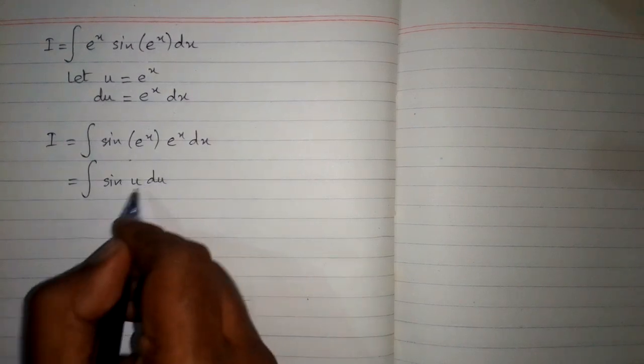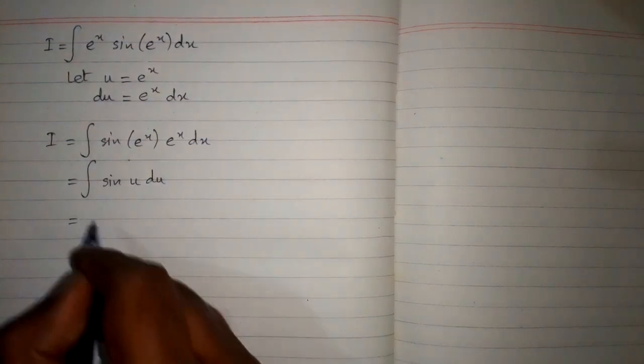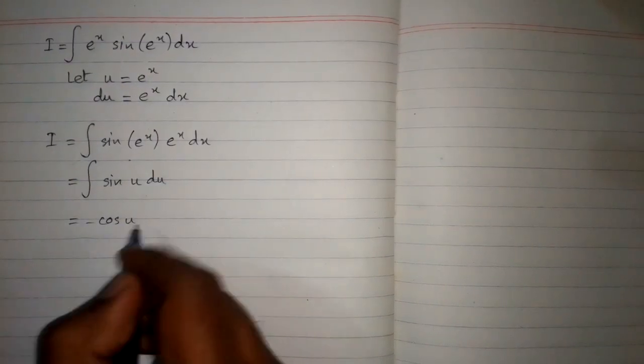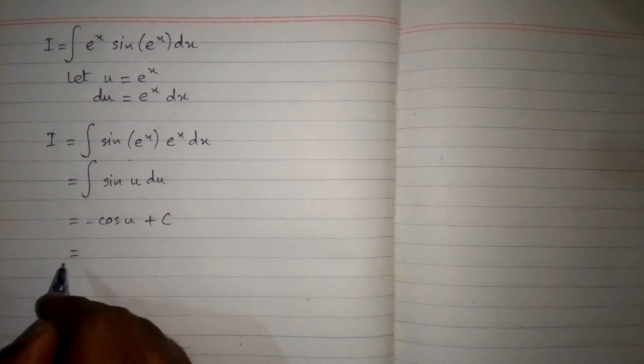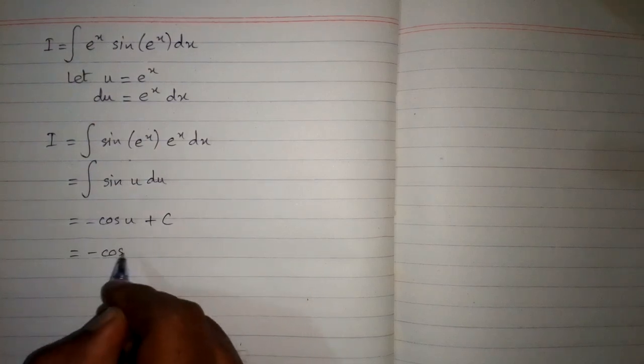The integral of sin(u) is -cos(u) + c, where c is the constant of integration. Now we will substitute back the value of u, which is e^x.